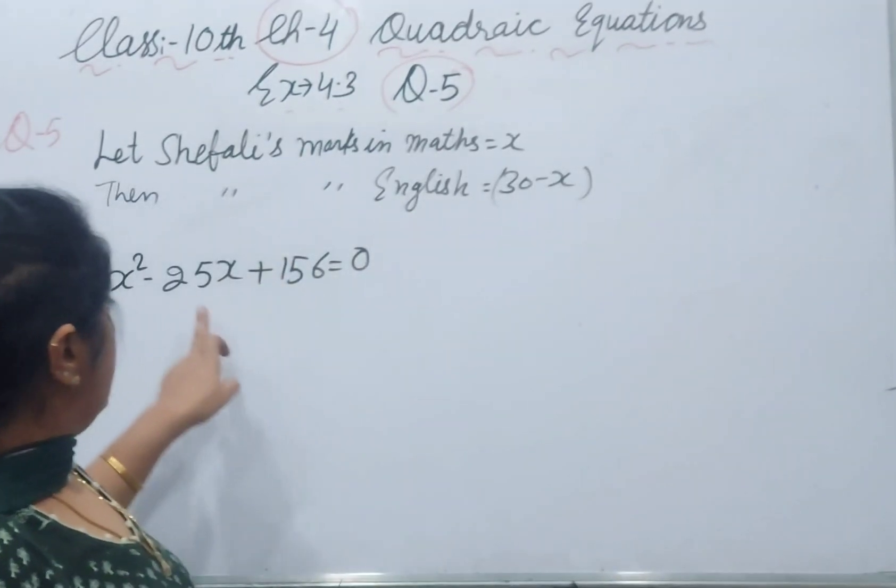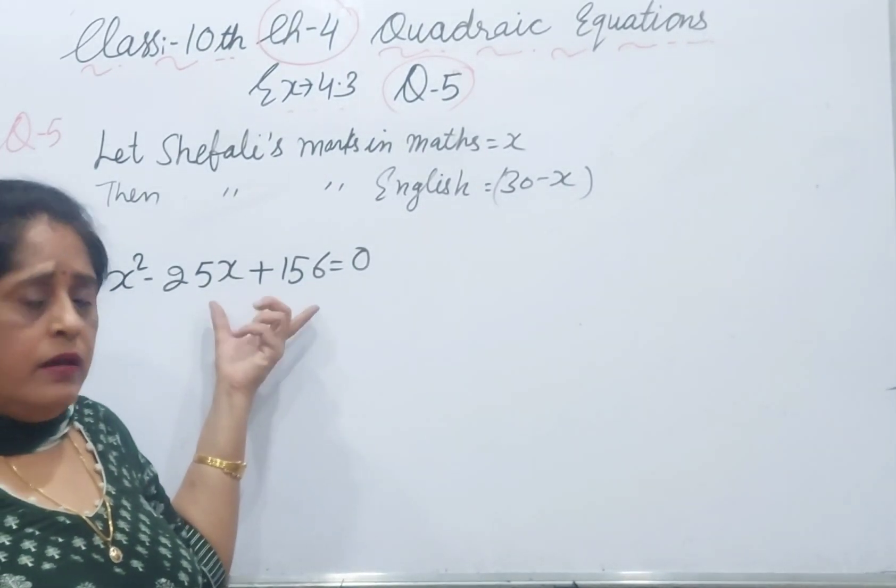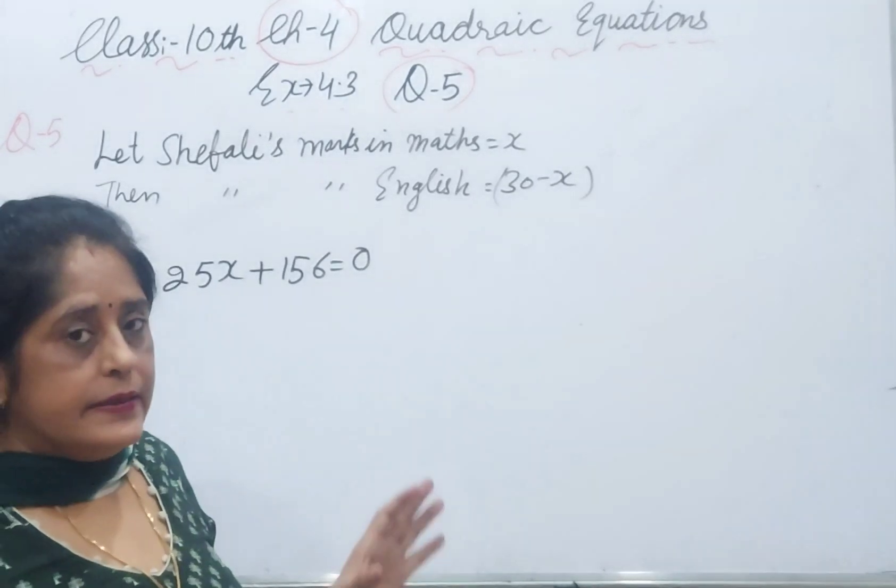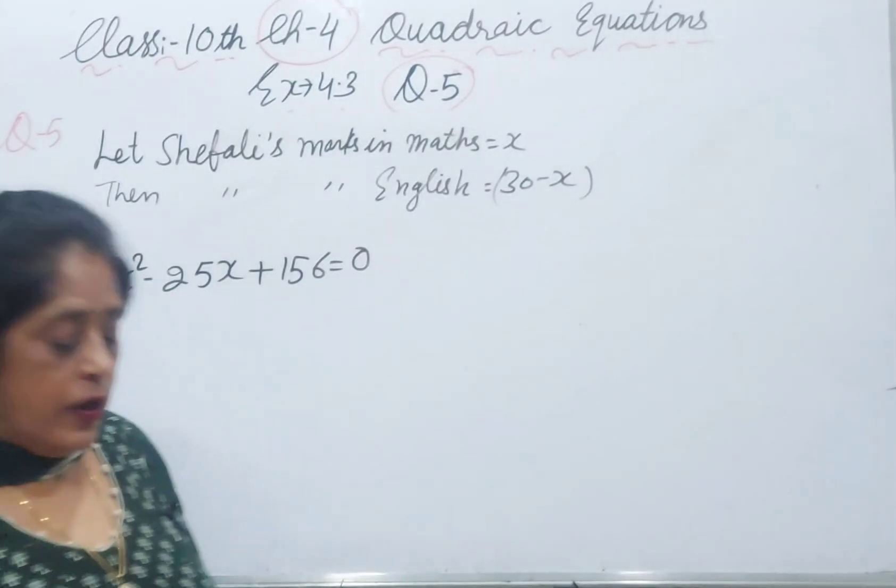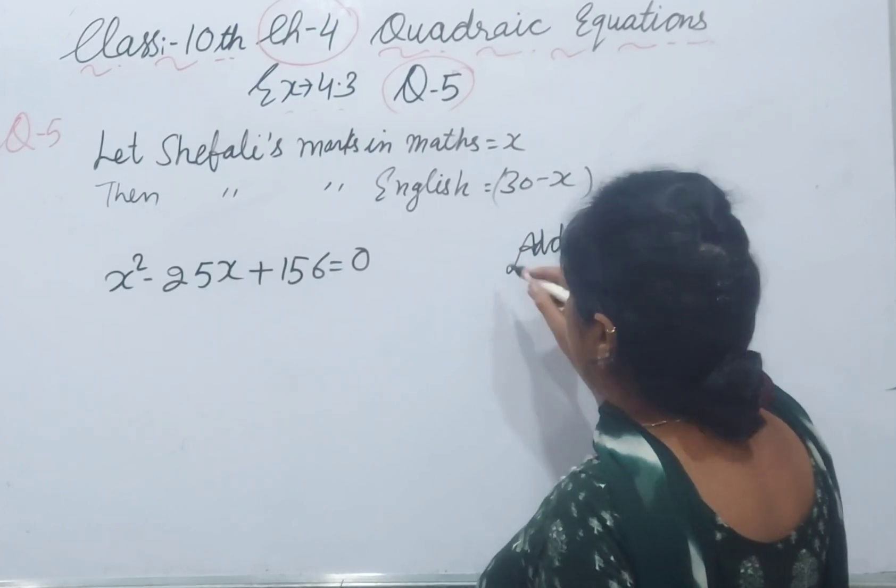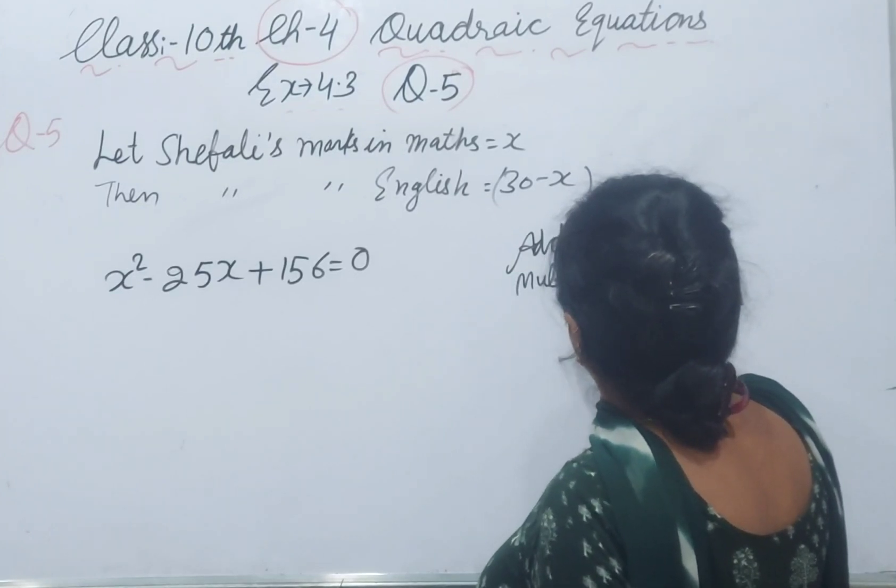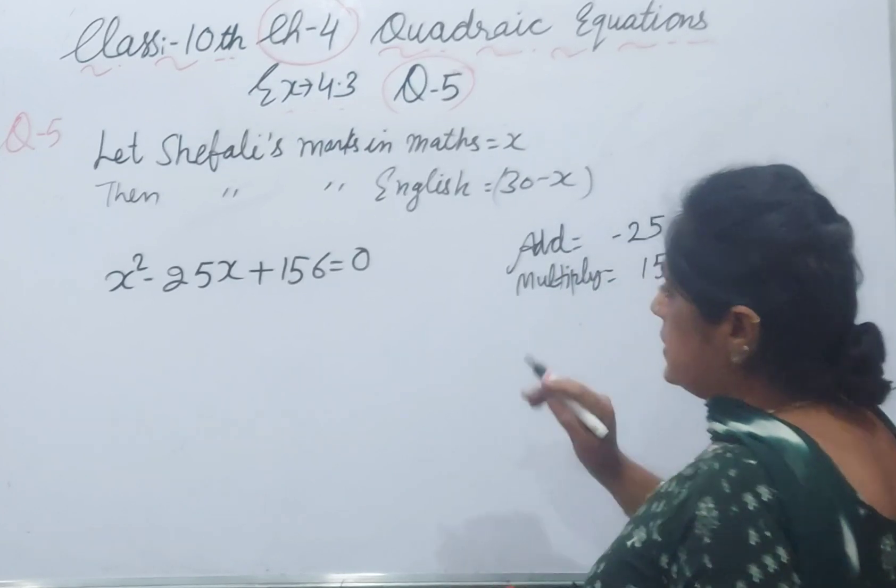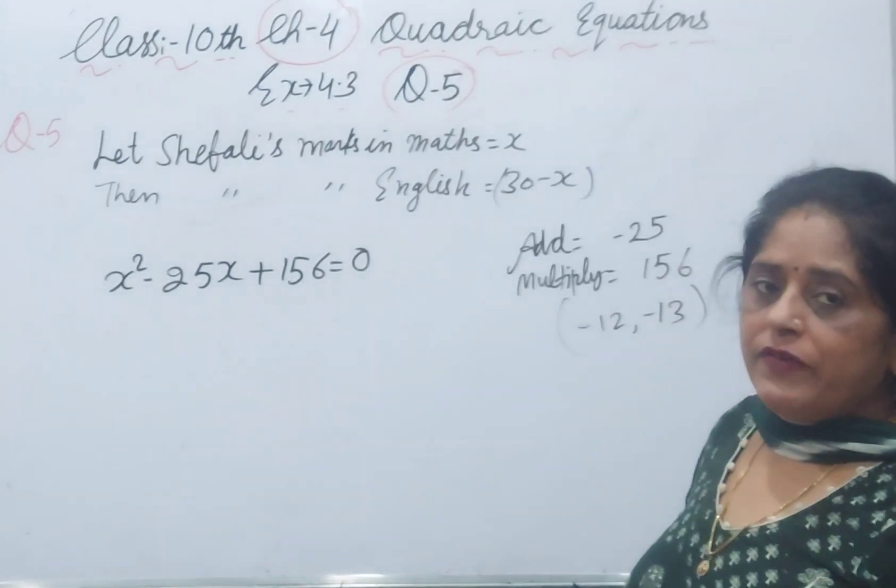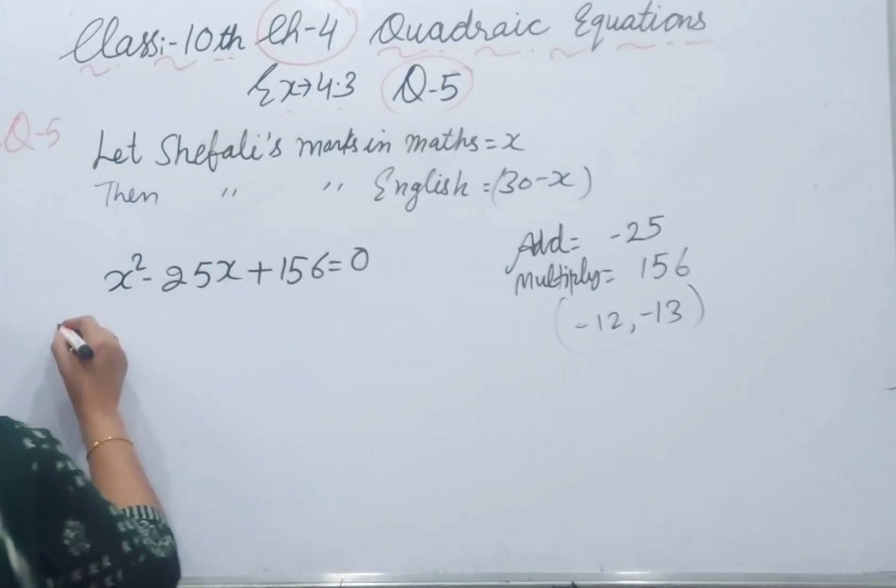Now, I've written this quadratic equation here. You can solve it by quadratic formula or split the middle term. I will use split the middle term. We need two factors that when we add give minus 25 and when we multiply give 156. The two factors are minus 12 and minus 13. When you add, minus 25; when you multiply, plus 156.